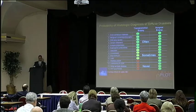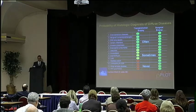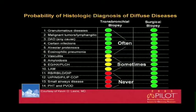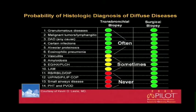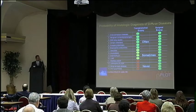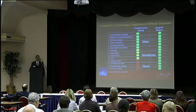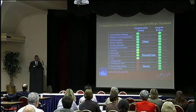Bronchoscopy can often make the diagnosis of granulomatous diseases including sarcoidosis, tumors, diffuse alveolar damage of any cause, infection, alveolar proteinosis, and eosinophilic pneumonia. Sometimes it can diagnose vasculitis, amyloidosis, pulmonary Langerhans cell histiocytosis, and LAM. But bronchoscopy is rarely to never useful for UIP — usually you do a biopsy in a UIP patient and you get bronchial wall. Surgical lung biopsy, on the other hand, is useful for essentially everything, making it very valuable in cases where bronchoscopy is unlikely to make the diagnosis.